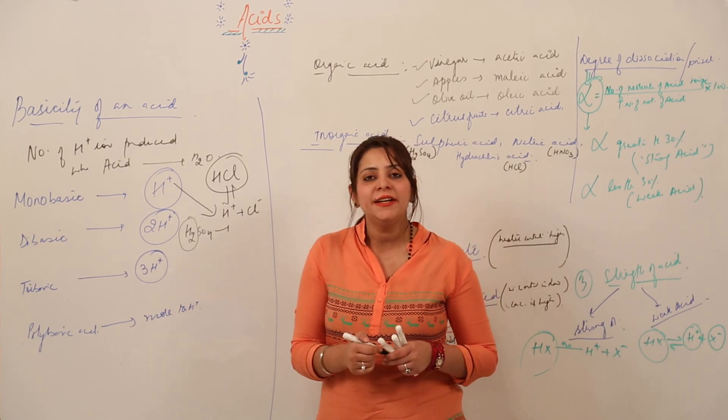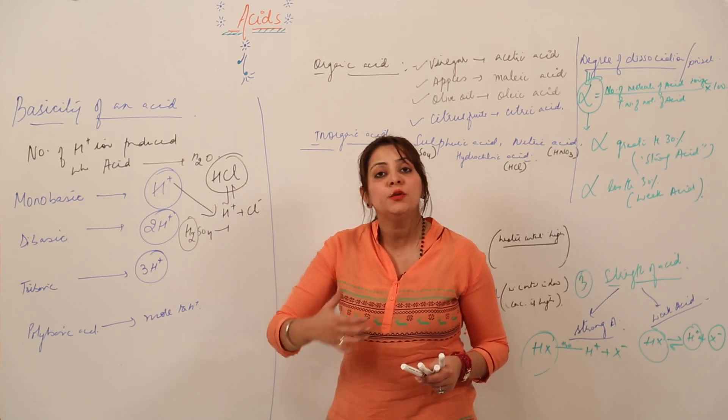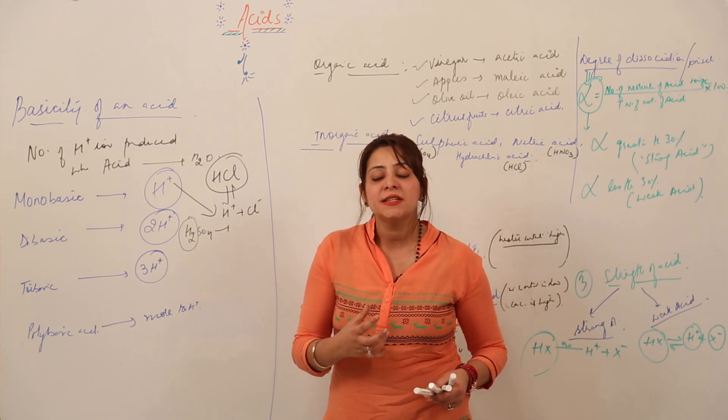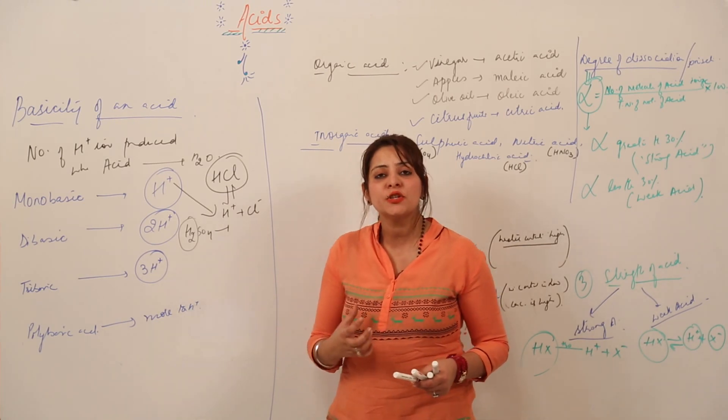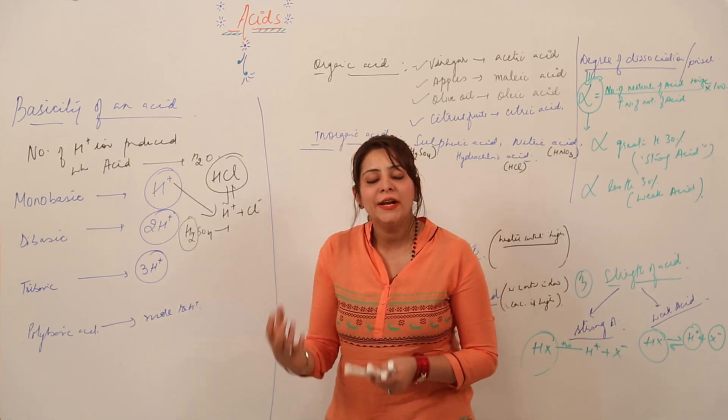It will be giving two H ions in two different steps. If any acid contains two or more H ions, it does not split to give all H ions in one go; it does it step by step. But the actual number of H ions, the ability of an acid to give H ions, is indicated by its basicity whether it gives in one go or in different steps.